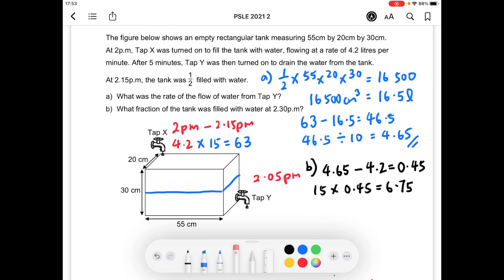At 2:15 p.m., the amount of water in the tank was 16.5 liters. It was half filled with water, remember? And because 6.75 liters of water is going to be drained off from 2:15 to 2:30 p.m., at 2:30 p.m., this is the amount of water that is left in the tank.